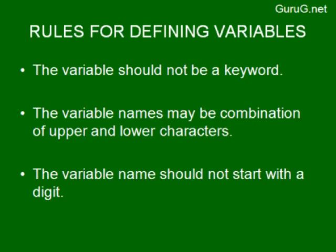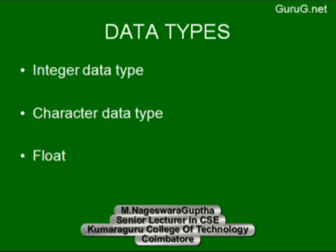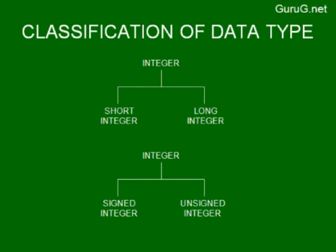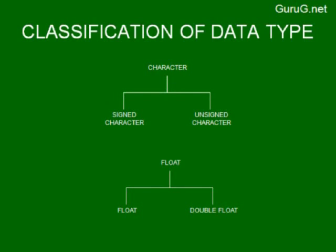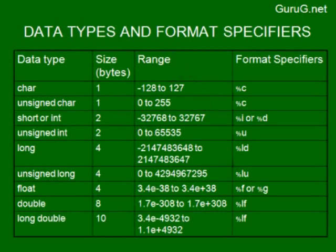There are three primary data types: integer, character, and float. Integers are classified as short integer and long integer, and also as signed and unsigned integer. The character data type is classified into float and double. The character data type has a size of one byte and ranges from -128 to 127, with format specifier %c. Unsigned character is also one byte, ranging from 0 to 255, also using %c.